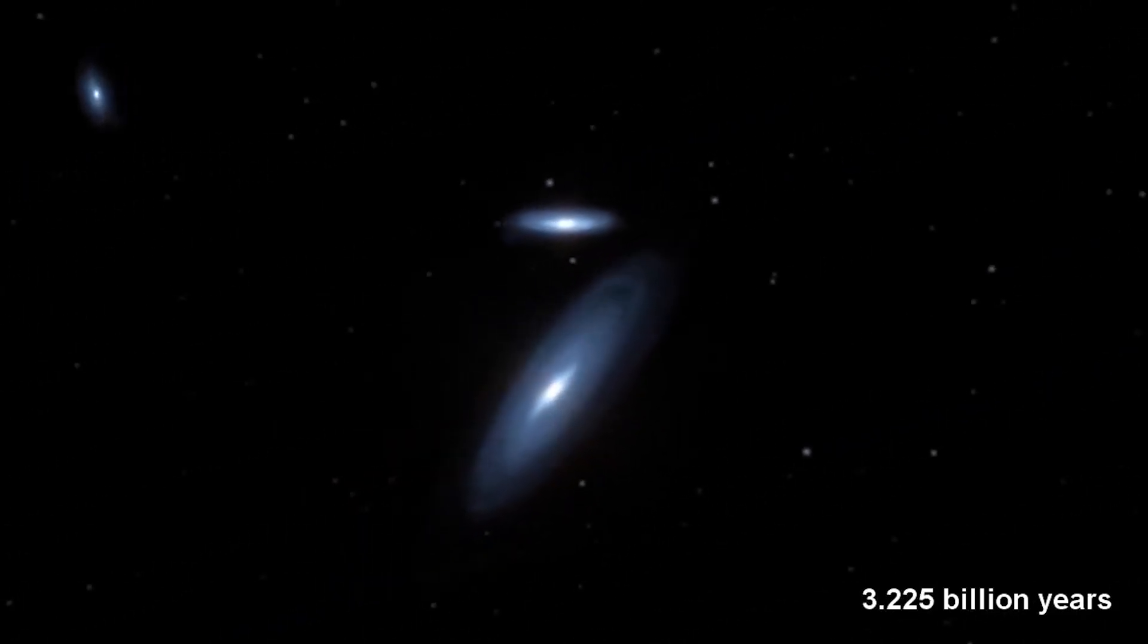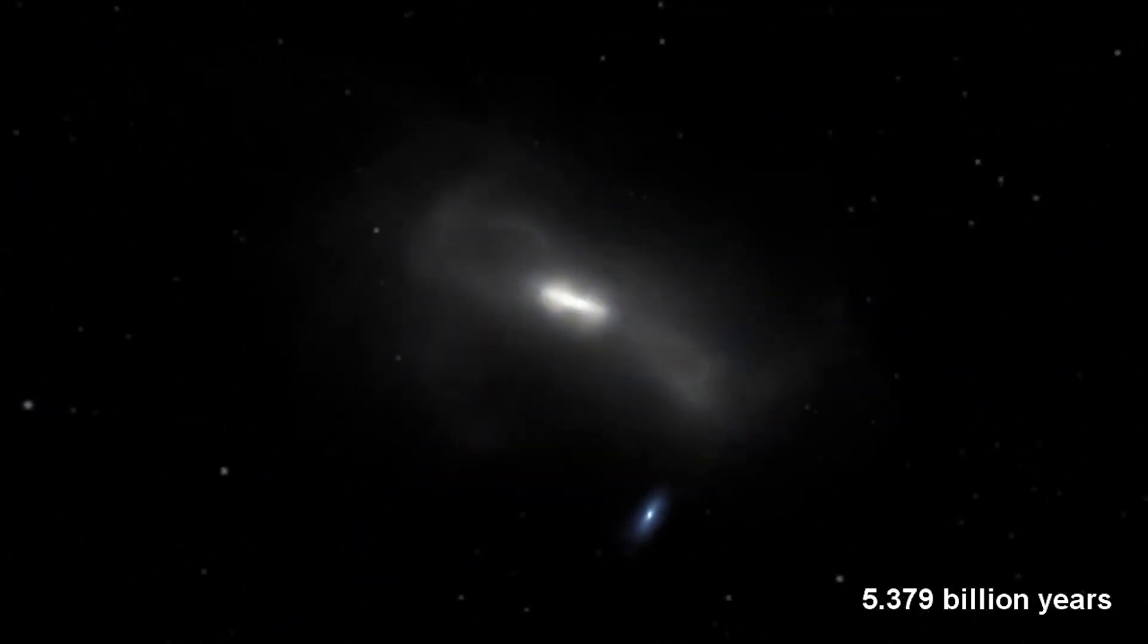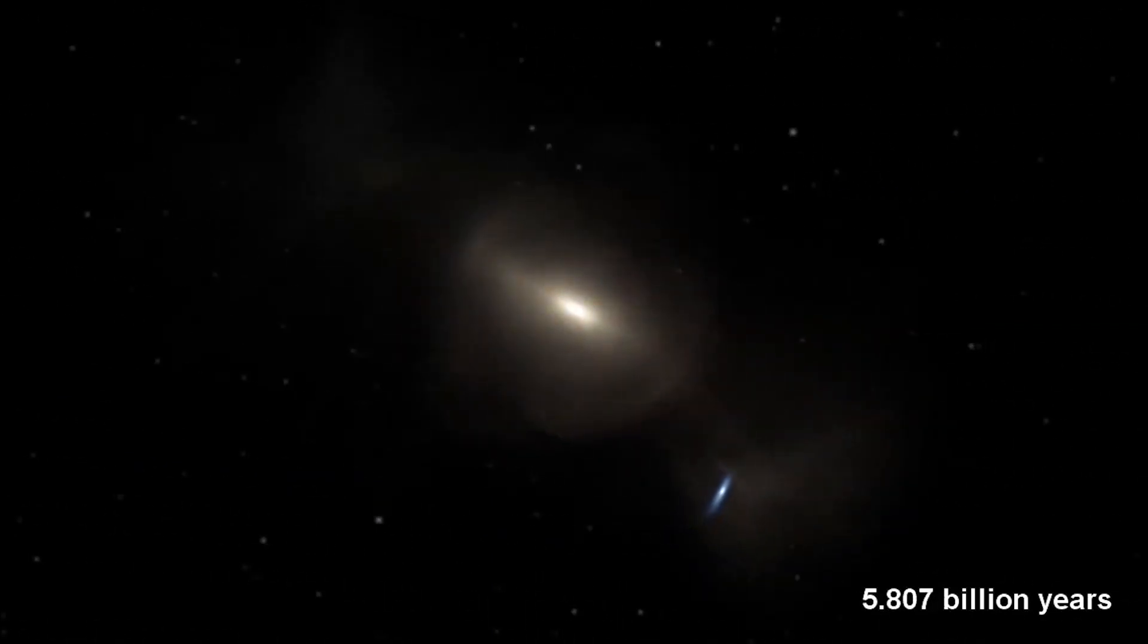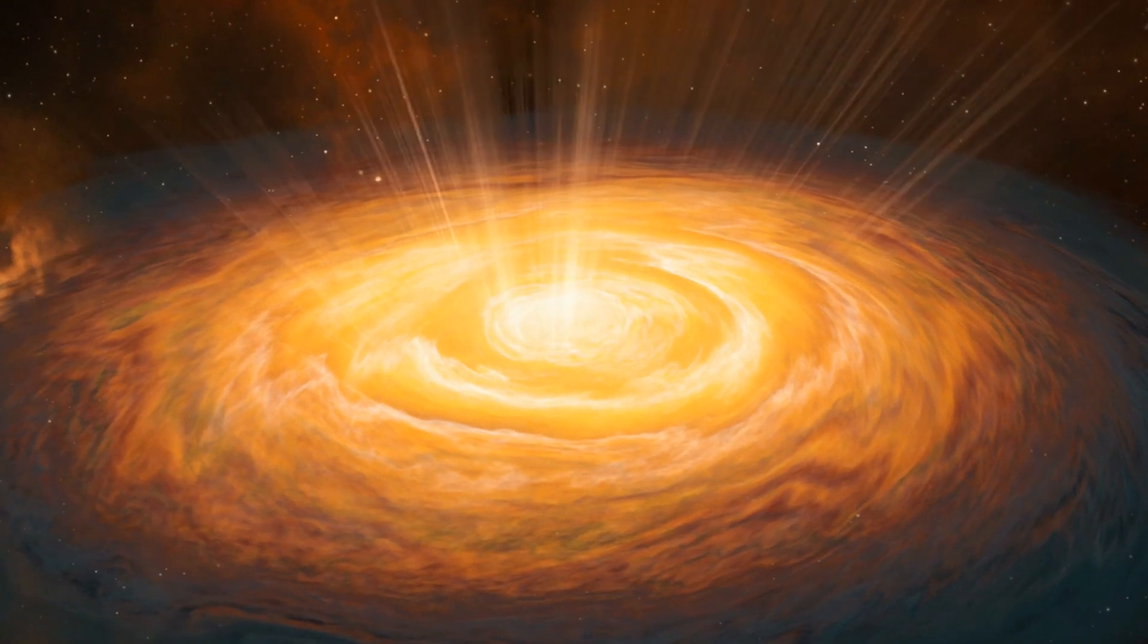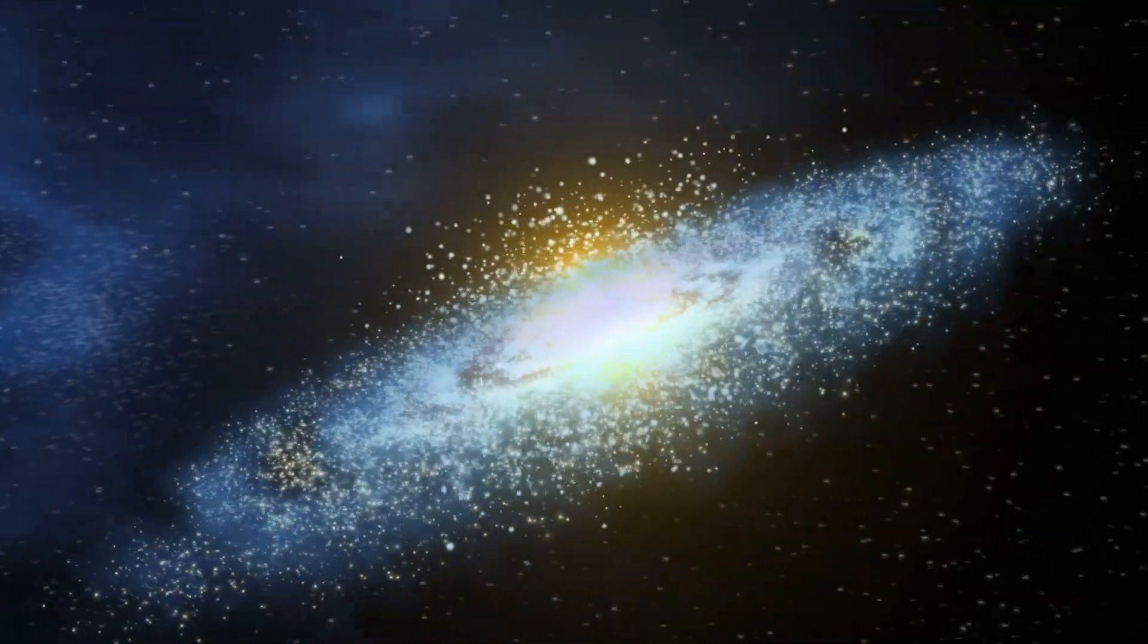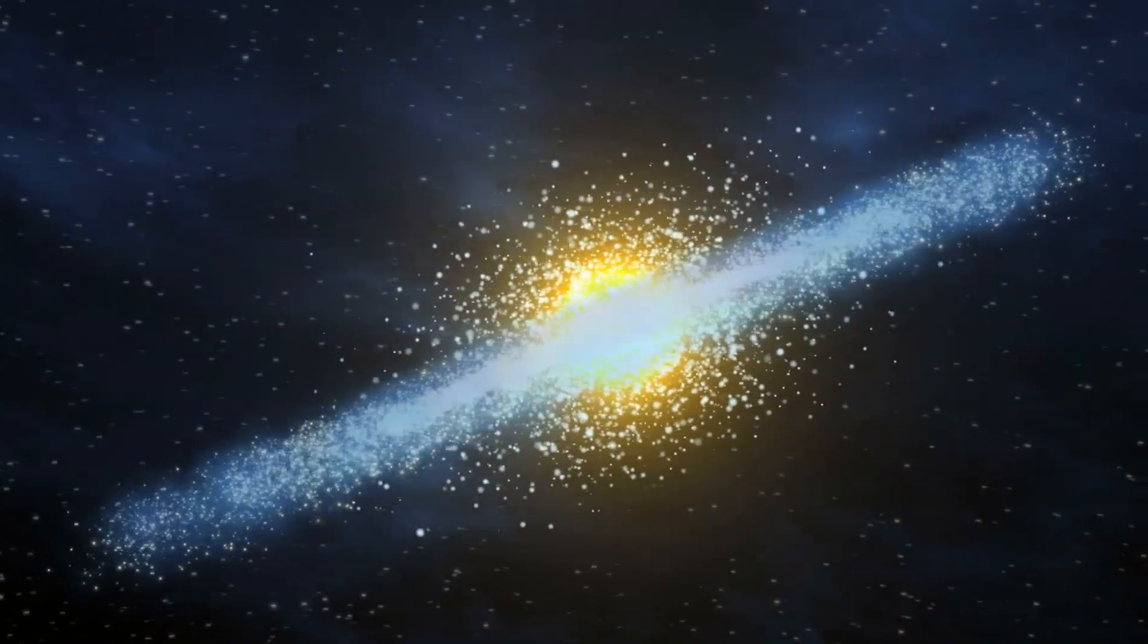The Milky Way and Andromeda are the largest two members of the cluster. The third member and only other galaxy in the group large enough to not count as a dwarf galaxy is the triangular galaxy, a spiral galaxy about one-tenth the size mass of the Milky Way and Andromeda.